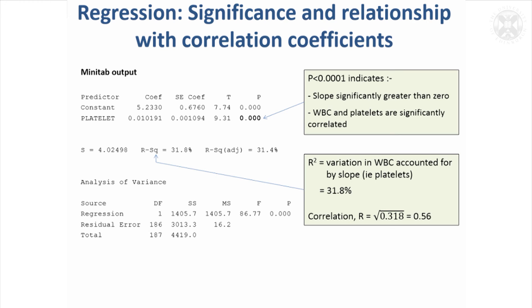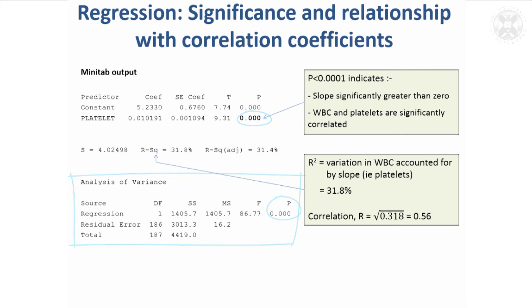So it's useful to see that regression and correlation analysis are really the same thing — they just present the results a bit differently. In terms of this analysis of variance table in Minitab, I'd probably ignore it because you don't need it. The p-value will be exactly the same as the p-value above, calculated using a slightly different test but effectively equivalent.